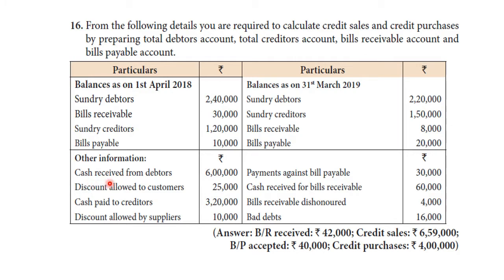Other information: cash received from debtors $6,000; discount allowed to customers $25,000; cash paid to creditors $3,20,000; discount allowed by supplier $10,000; payment against bills payable $30,000; cash received for bills receivable $60,000; bills receivable dishonoured $4,000; bad debts $60,000.